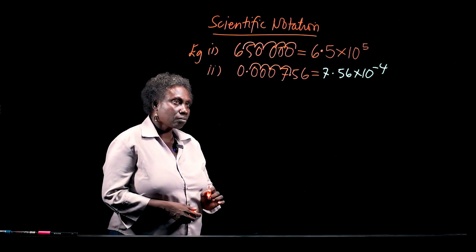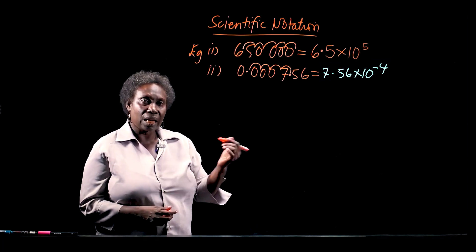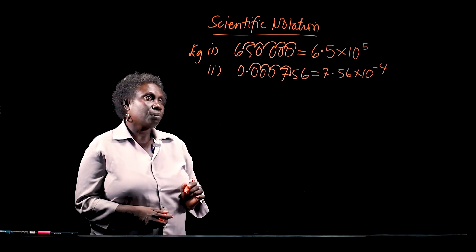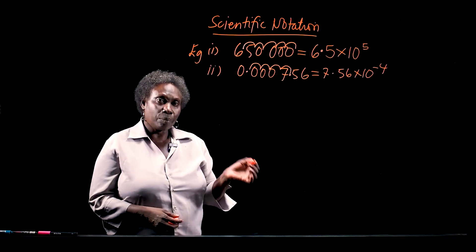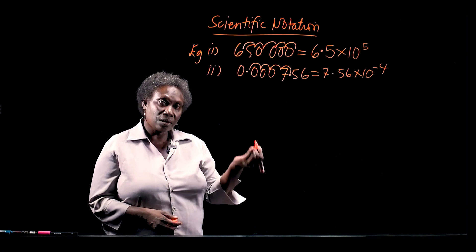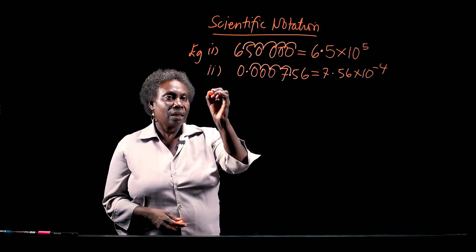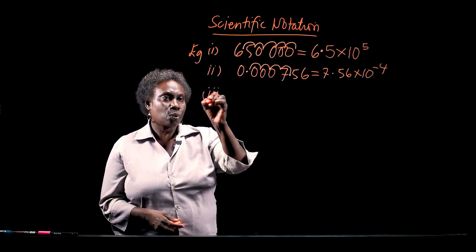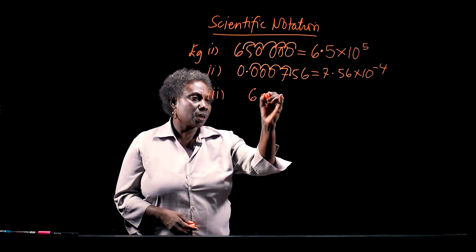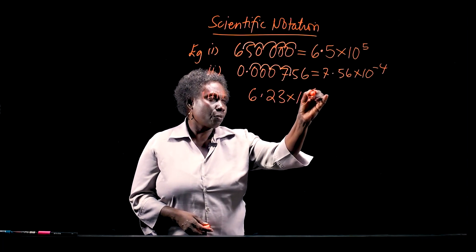This is writing ordinary numbers in scientific notation. Now, in our next example, I am going to show you how to write scientific notation numbers as ordinary numbers. Let's look at example 3. Let's say if I have 6.23 times 10 to the power of 4.